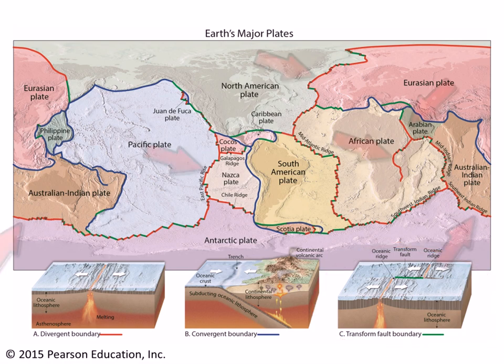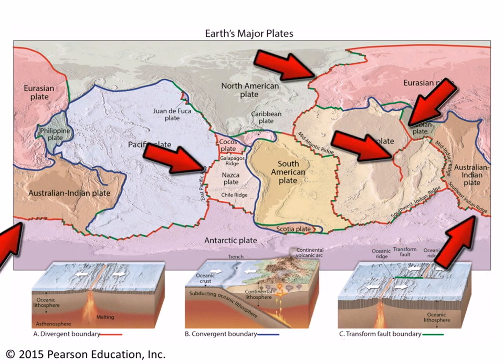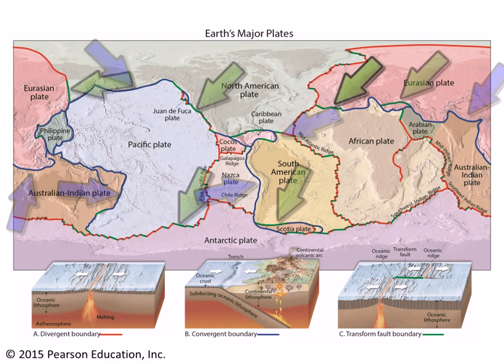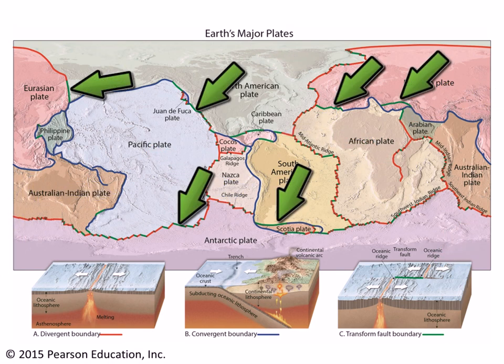So on this map, the divergent boundaries are shown in red, the convergent are shown in blue, and the transform are shown in green.